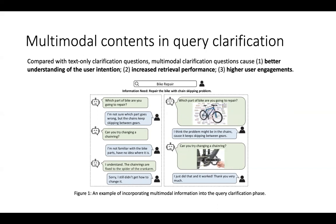Compared with text-only clarification questions, multimodal clarification questions enable better understanding of the user's intention, and can help with increased retrieval performance and higher user engagement. This example shows incorporating multimodal information into the query clarification phase — when incorporating an image showing different parts of a bicycle, it helps the user better understand which component he or she is actually referring to.